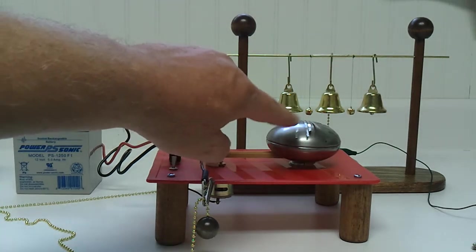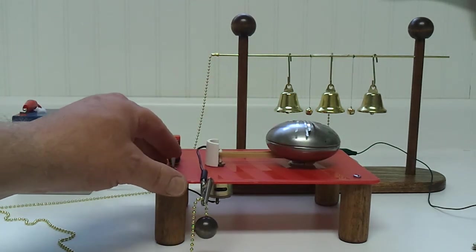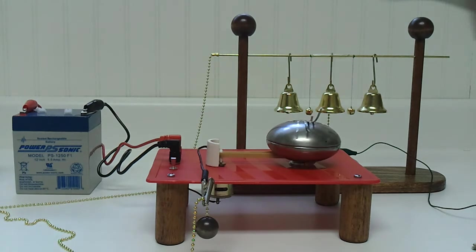These little Mylar strips on top of the dome here act as an electroscope. And you can see that as they take a charge, they'll separate from that dome. So it is creating a charge.